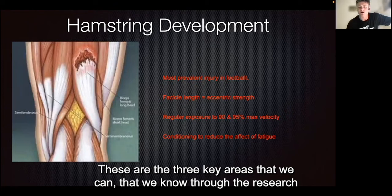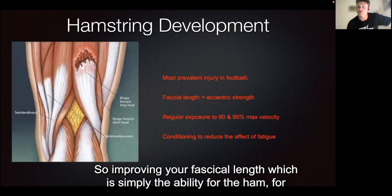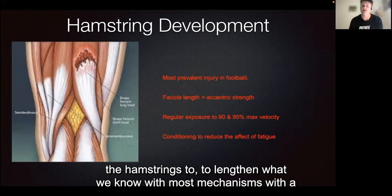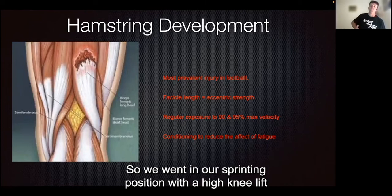These are the three key areas the research tells us reduce your likelihood of injury. First, improving your fascicle length — simply the ability for the hamstrings to lengthen. What we know with most mechanisms is that they strain when the hip is in hip flexion, such as when we're in our sprinting position with a high knee lift.